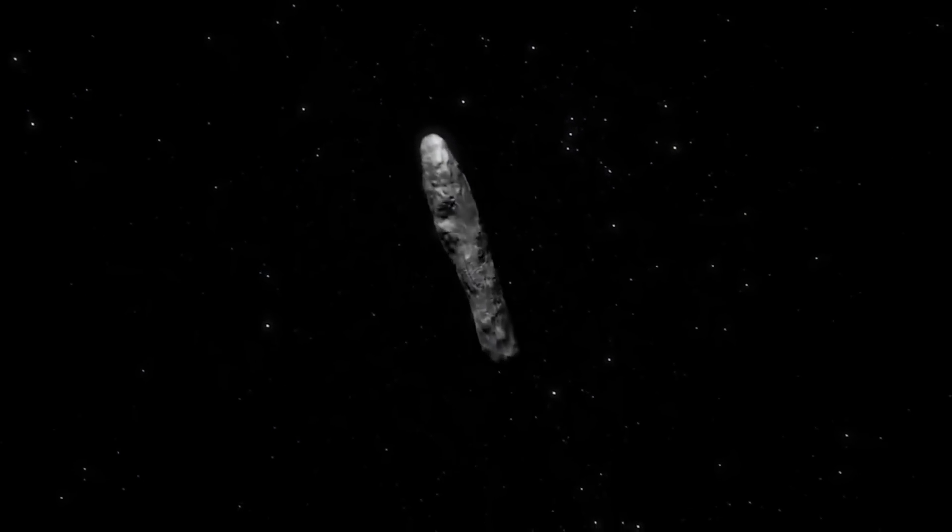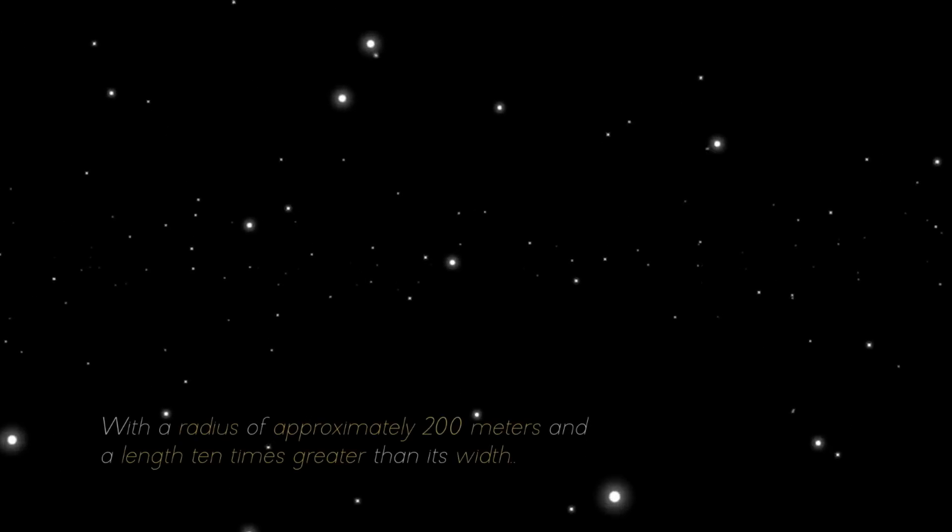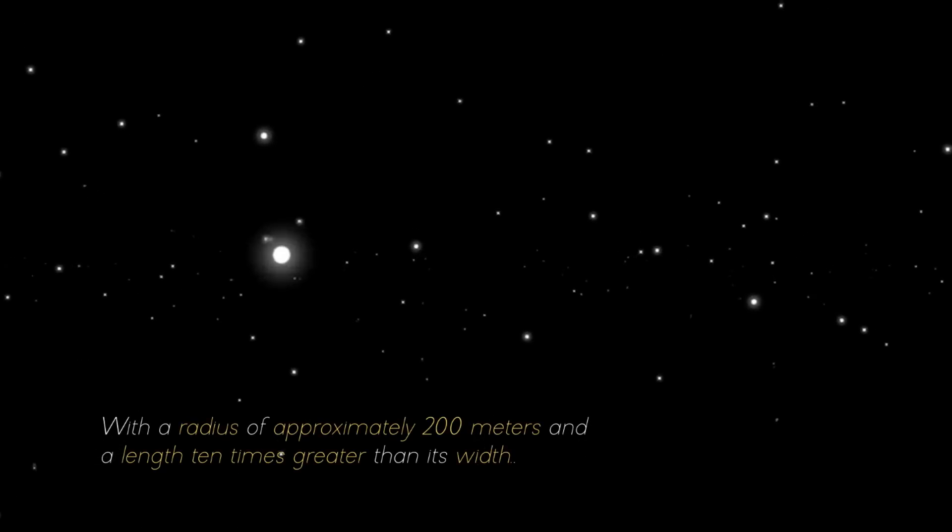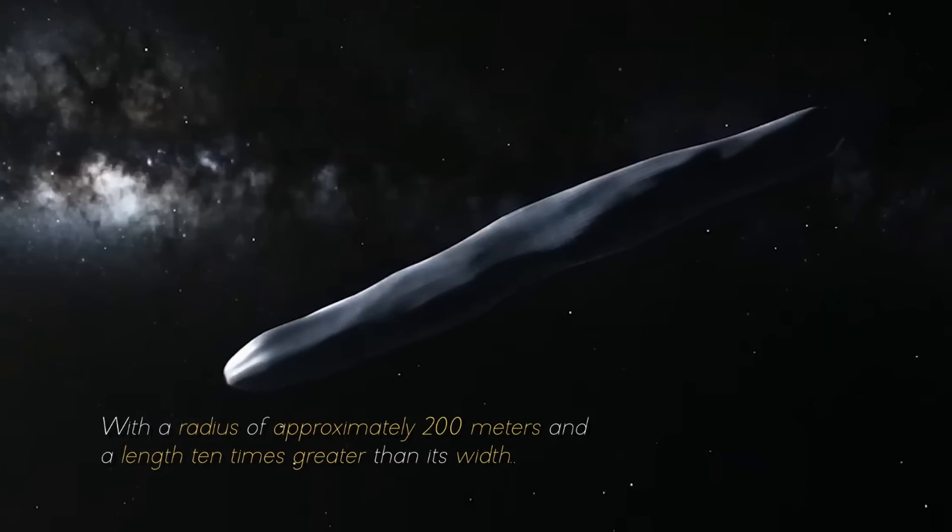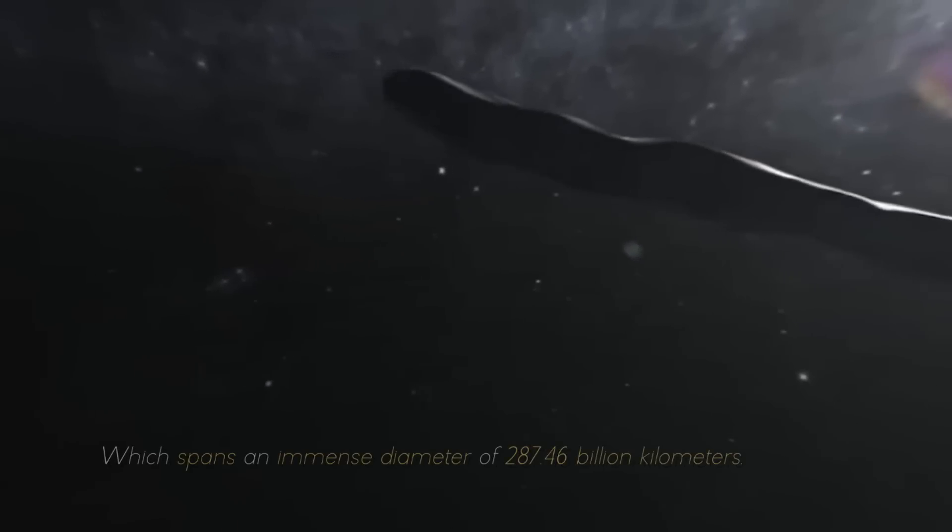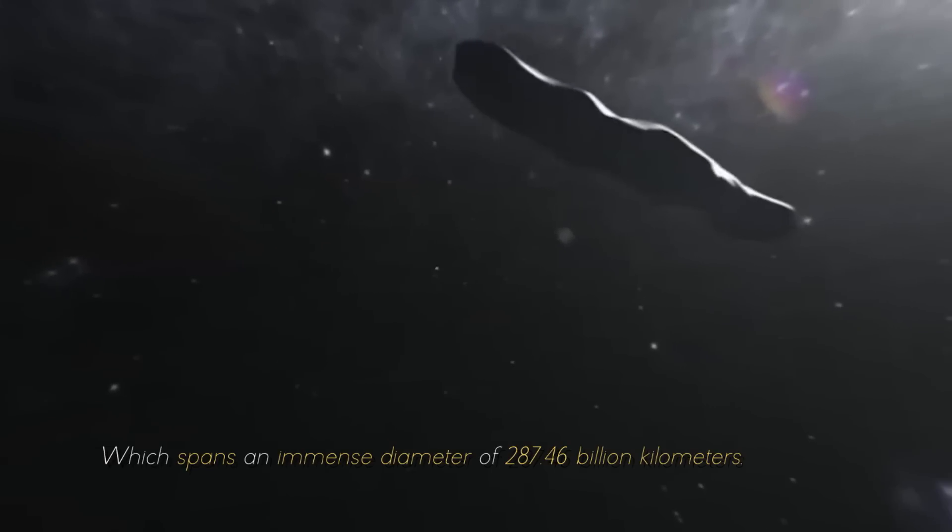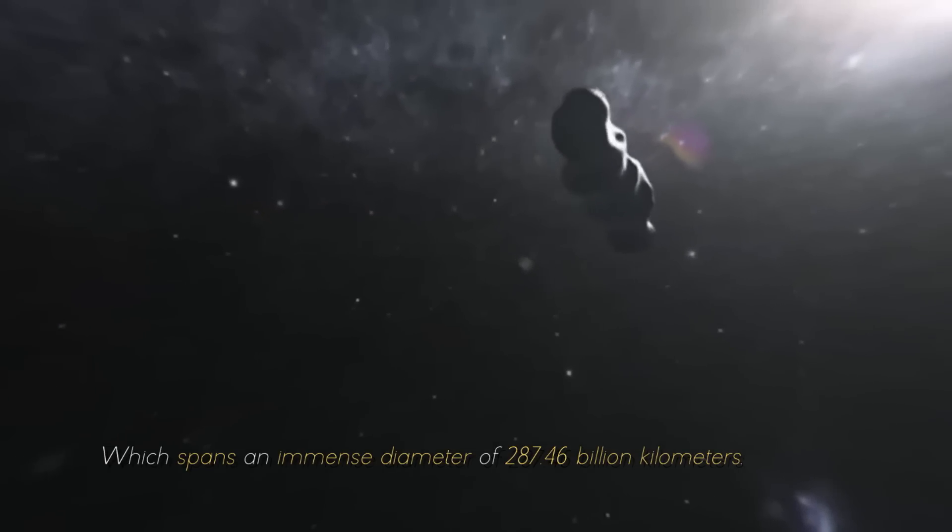Furthermore, the size of Oumuamua was equally astonishing, with a radius of approximately 200 meters and a length 10 times greater than its width. These proportions were unprecedented, especially within our solar system, which spans an immense diameter of 287.46 billion kilometers.